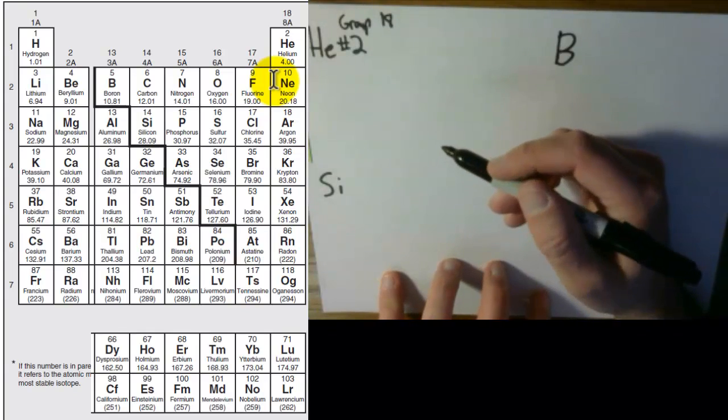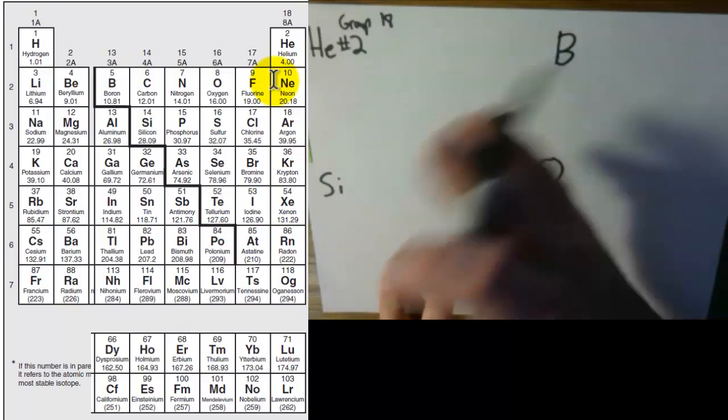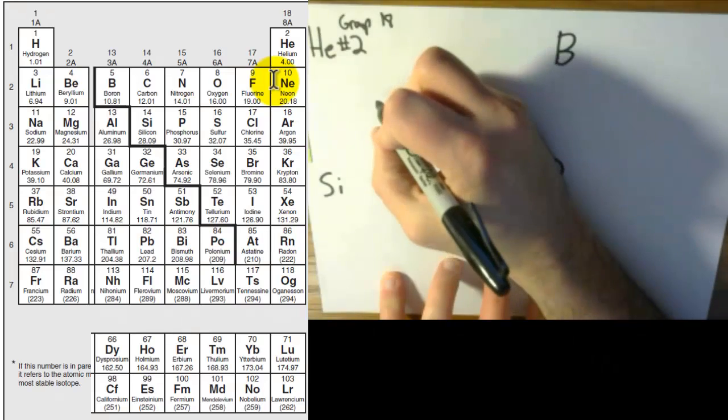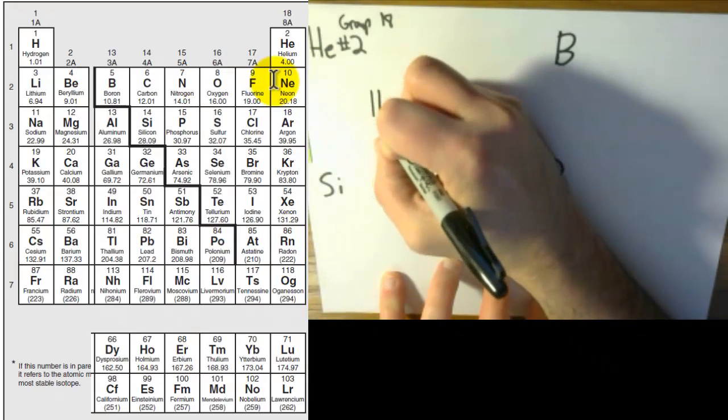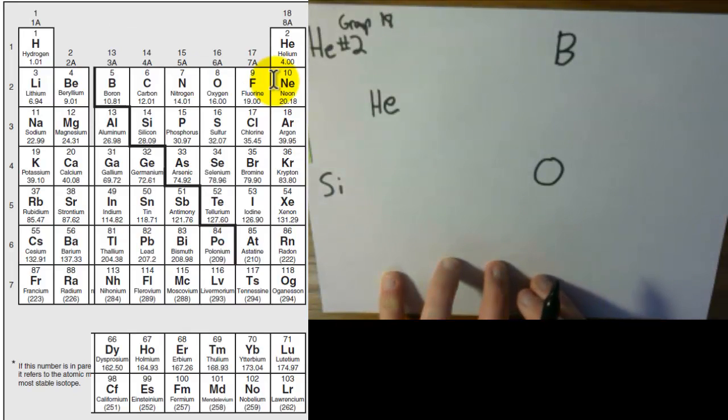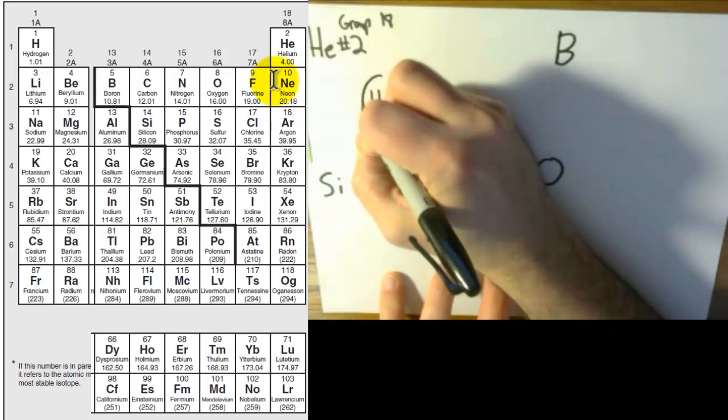However, since helium is element number two, this is the only exception to the rule, which is why we're starting with this one. So to do this one, you would take the symbol for the element, you put that in the middle, and then you're going to draw a ring around it for every row. So this is in the first row, so it only has one ring.